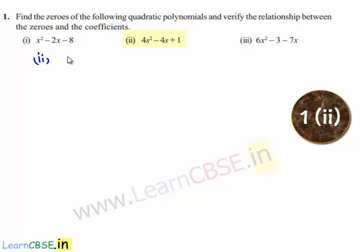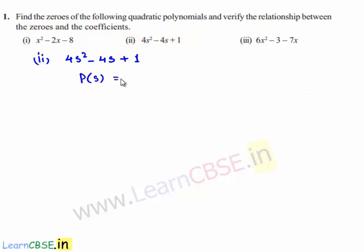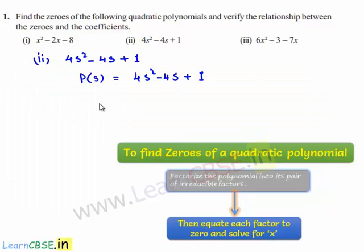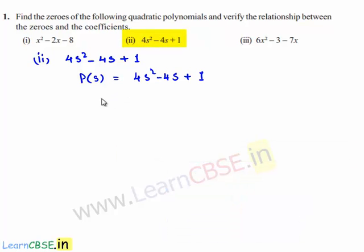Coming to the second bit, which is 4s² minus 4s plus 1. Let P of s be a polynomial equal to 4s² minus 4s plus 1. In order to find the zeros of the polynomial P of s, we need to factorize the given polynomial. So 4s² minus 4s plus 1 can be written as 4s² minus 2s minus 2s plus 1.